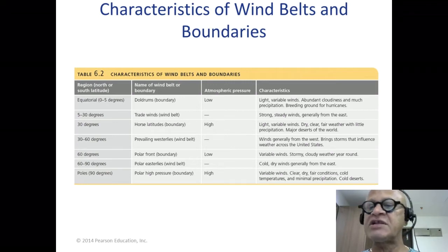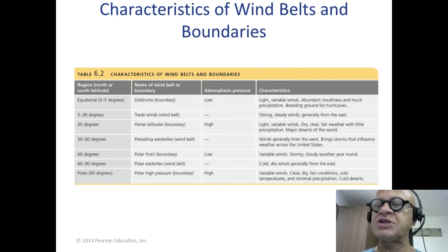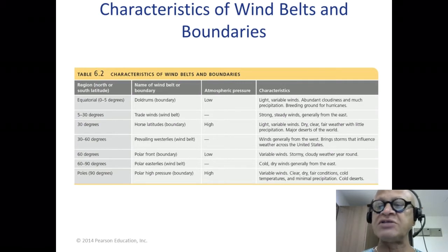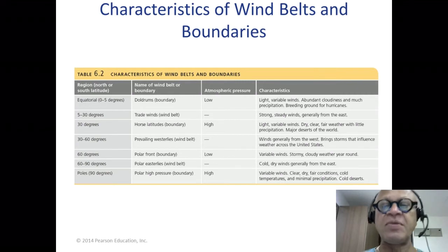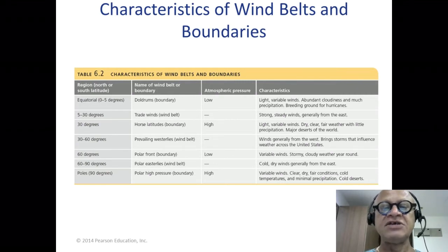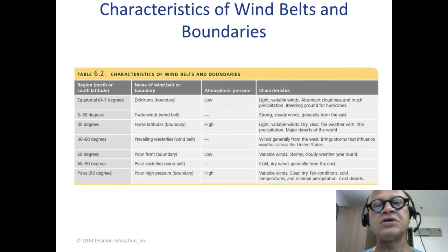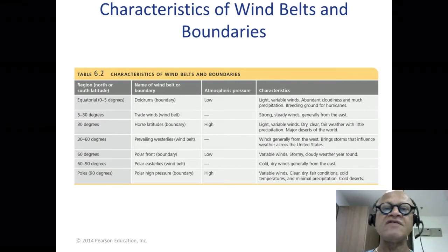From 30 to 60 degrees, we have the prevailing westerlies — strong winds associated with the so-called storm tracks — and they bring storms that actually affect Europe and the United States a lot more. We are obviously shielded from the north by the Himalayas, but once in a while we get some influence through the northwest corner, called westerly disturbances, which are related to the prevailing westerlies.